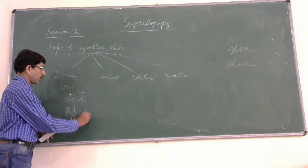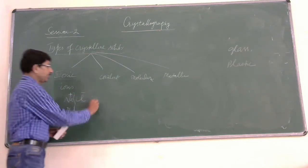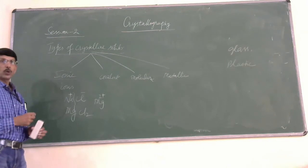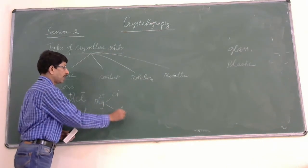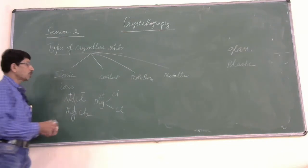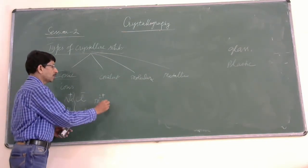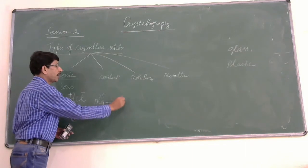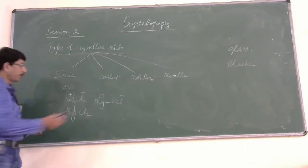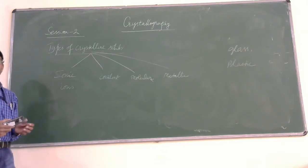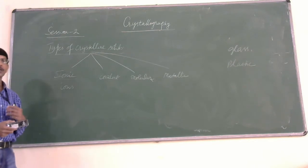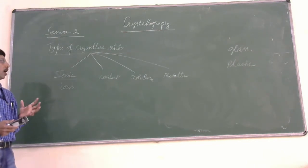If you consider magnesium chloride: magnesium loses two electrons, one to each chlorine atom. When magnesium chloride ionizes, you get a magnesium ion (Mg²⁺) and two chloride ions (Cl⁻). Therefore magnesium chloride is an example of an ionic solid. You name any ionic compound that is a solid — it is an example of an ionic solid.